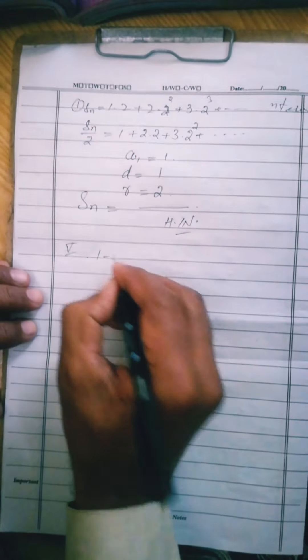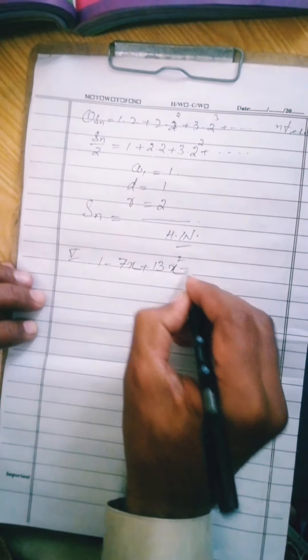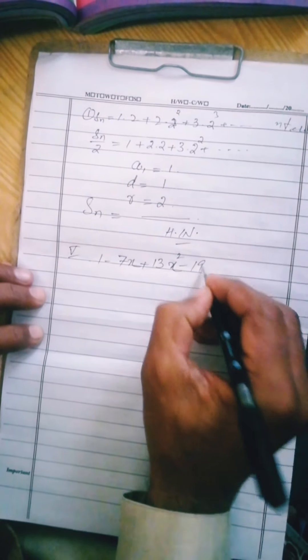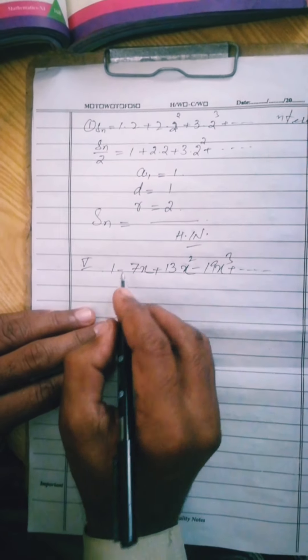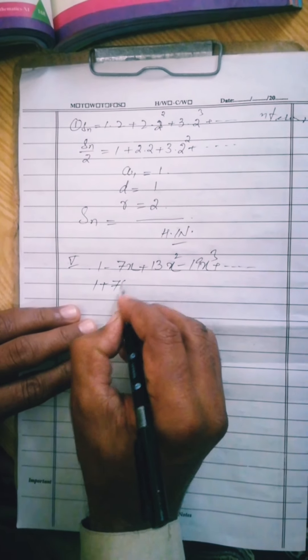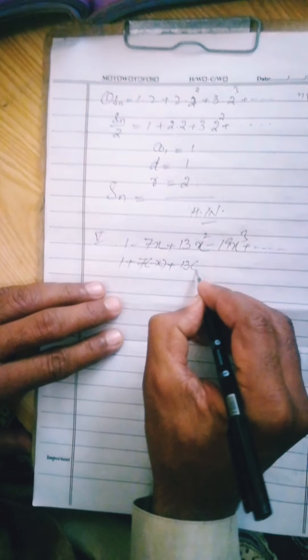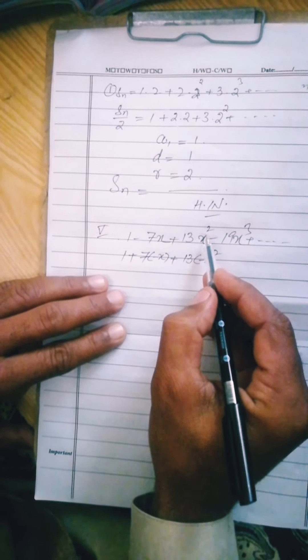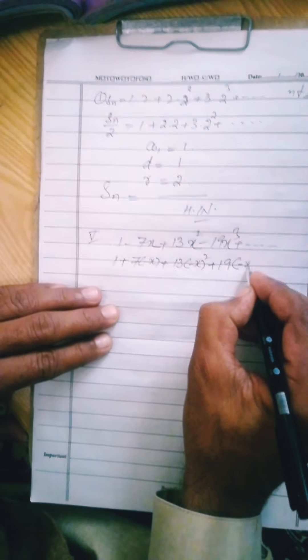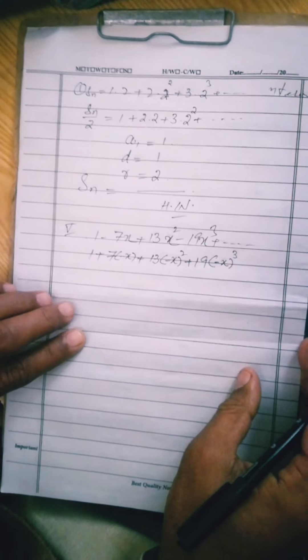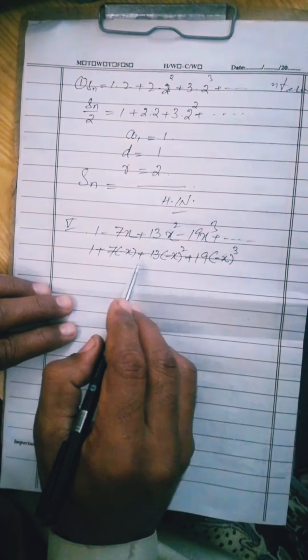Next question 6. 1 minus 7x plus 13x square minus 19x cube plus and so on. This is a series. Change this: minus, plus 7, minus x, plus, minus, so 13 then minus x square. This is x square but if you want minus x square, plus 19 minus x cube. So this series shape changes. This series is a geometric series: minus x, minus x, minus x power 1, 2, 3. This is a geometric series.